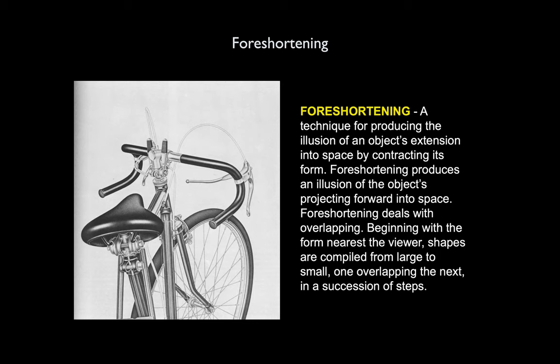Foreshortening is a technique for producing the illusion of an object's extension into space by contracting its form. Foreshortening produces an illusion of objects projecting forward into space. It deals with overlapping: beginning with the form nearest the viewer, shapes are compiled from large to small, one overlapping the next in a succession of steps.